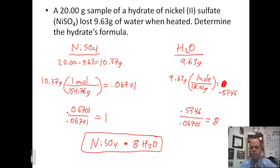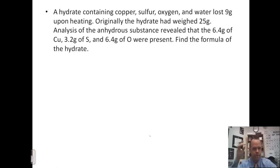We'll try one more. This one actually involves an empirical formula. A hydrate contains copper, sulfur, oxygen, and lost 9 grams upon heating. Originally, the hydrate weighed 25 grams. Analysis of the substance revealed that 6.4 grams of copper, 3.2 grams of sulfur, and 6.4 grams of oxygen were present. Find the formula of the hydrate.